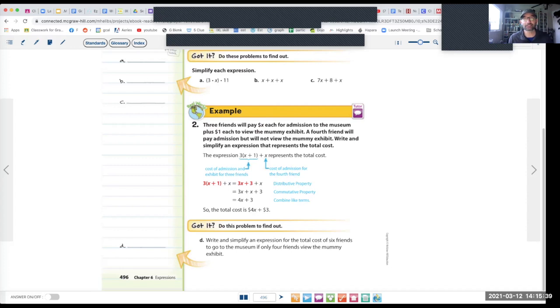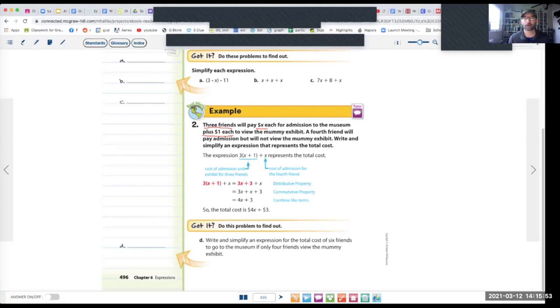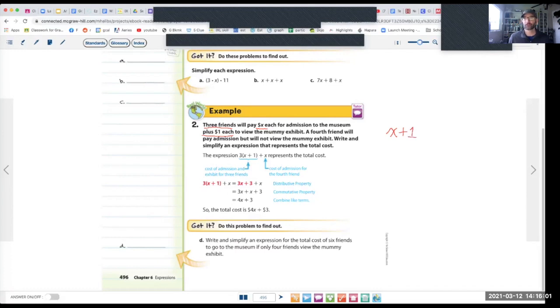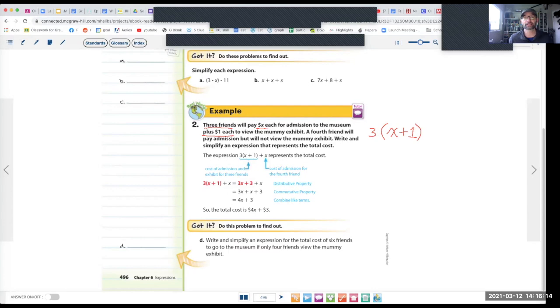All right, so let's look at example 2 at the bottom of the page. Here it says 3 friends will pay x dollars each. So I'm going to underline that, it's important that it's 3 friends and they pay x dollars each for admission to the museum plus $1 each to view the mummy exhibit. So let's just do that part for now. So each person is paying x dollars plus they're paying another $1, right? So there's 3 people doing that, so that means this whole thing is going to be times 3. So we write it like that: 3 times x plus 1 because they're each paying x dollars because we don't know exactly how much the museum costs, so we're calling it x. But we know they have to pay an extra $1 for the mummy. Now a fourth friend, so that's one more friend, will pay admission, which we know is x is admission, but not view the mummy exhibit. So he's not paying the 1. So that means we have to write one more x here. 3 times the quantity x plus 1 plus x, right?